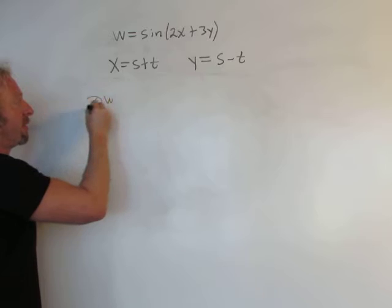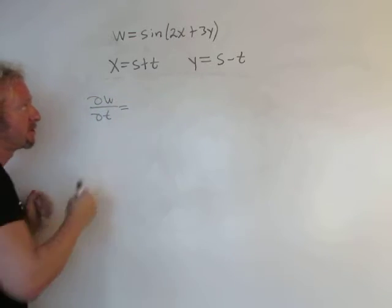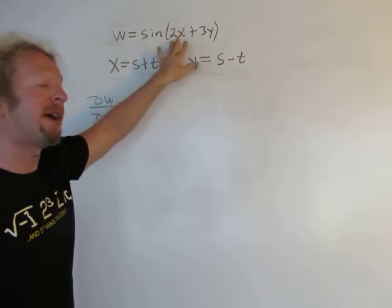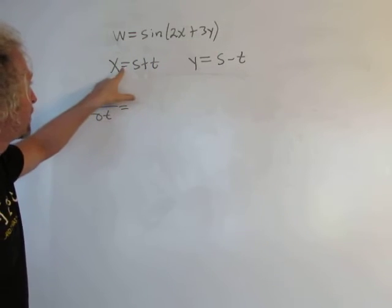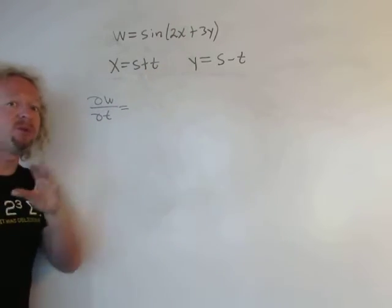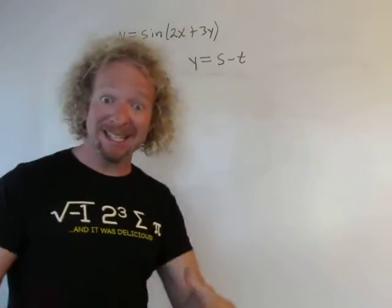So del w, del t. How would you use the chain rule in this situation? Well, w is a function of x and y, right? And then each of x and y are both functions of s and t. Therefore, w is actually a function of s and t, both.